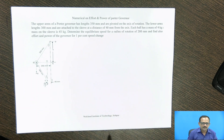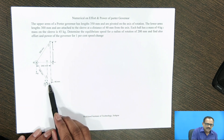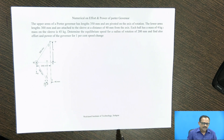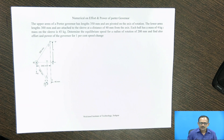The statement of the problem: The upper arms of the Porter Governor have a length of 350 mm and are pivoted on the axis of rotation. The lower arms have a length of 300 mm and are attached to the sleeve at a distance of 40 mm from the axis of rotation. Each ball has a mass of 4 kg and the mass of the sleeve is 45 kg. Determine the equilibrium speed for the radius of rotation of 200 mm and also find the effort and power of the governor for 1% speed change.